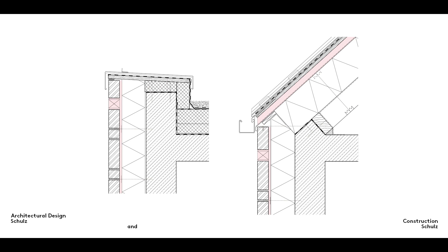Detailed drawings must also show whether and how certain layers are rear ventilated, and the location of the corresponding ventilation holes in the building. Here we can see how an open butt joint in the facing skin that functions as an upper ventilation opening is indicated.